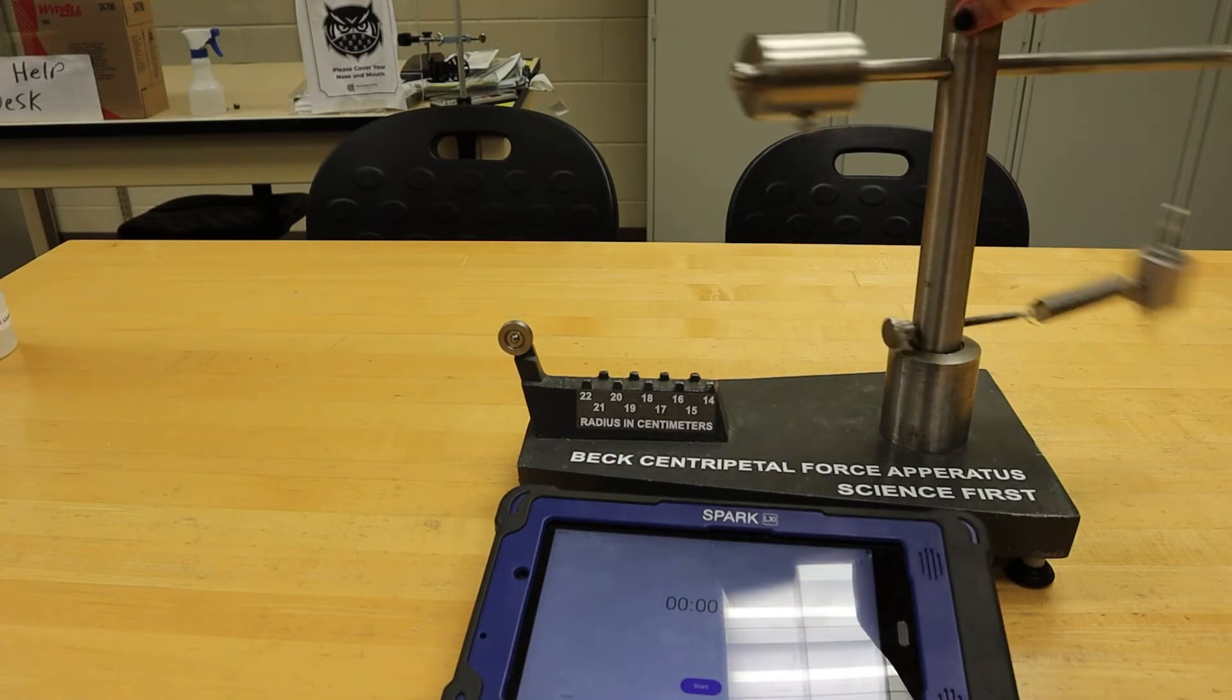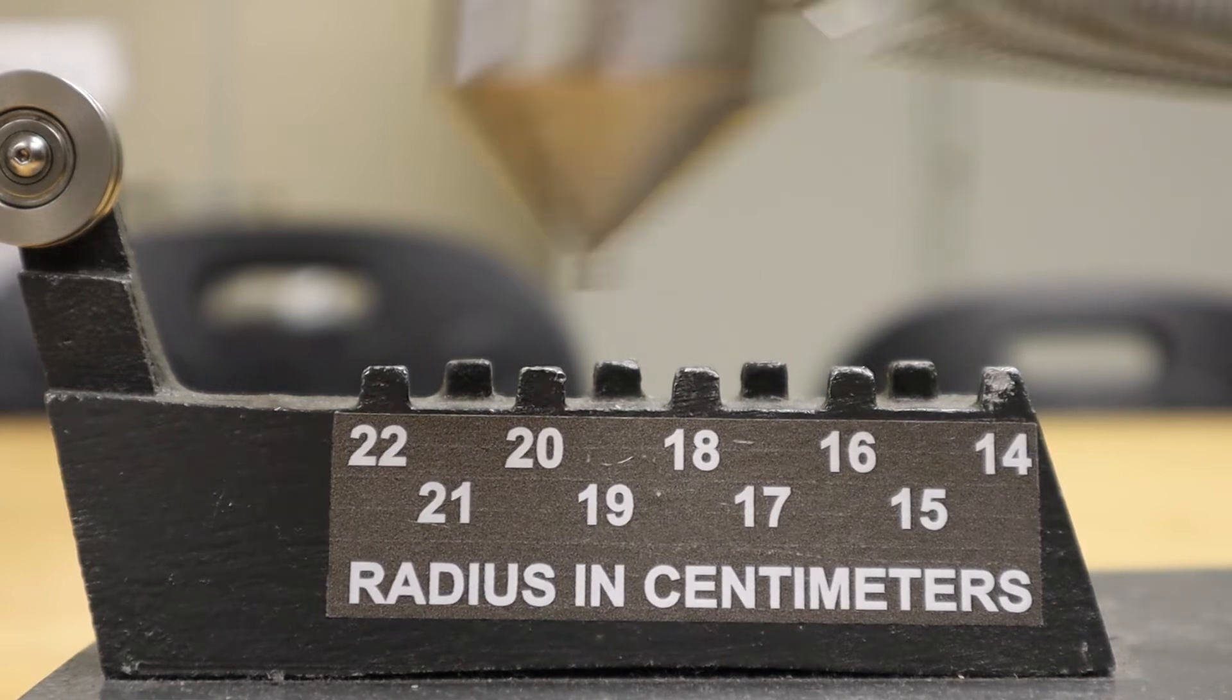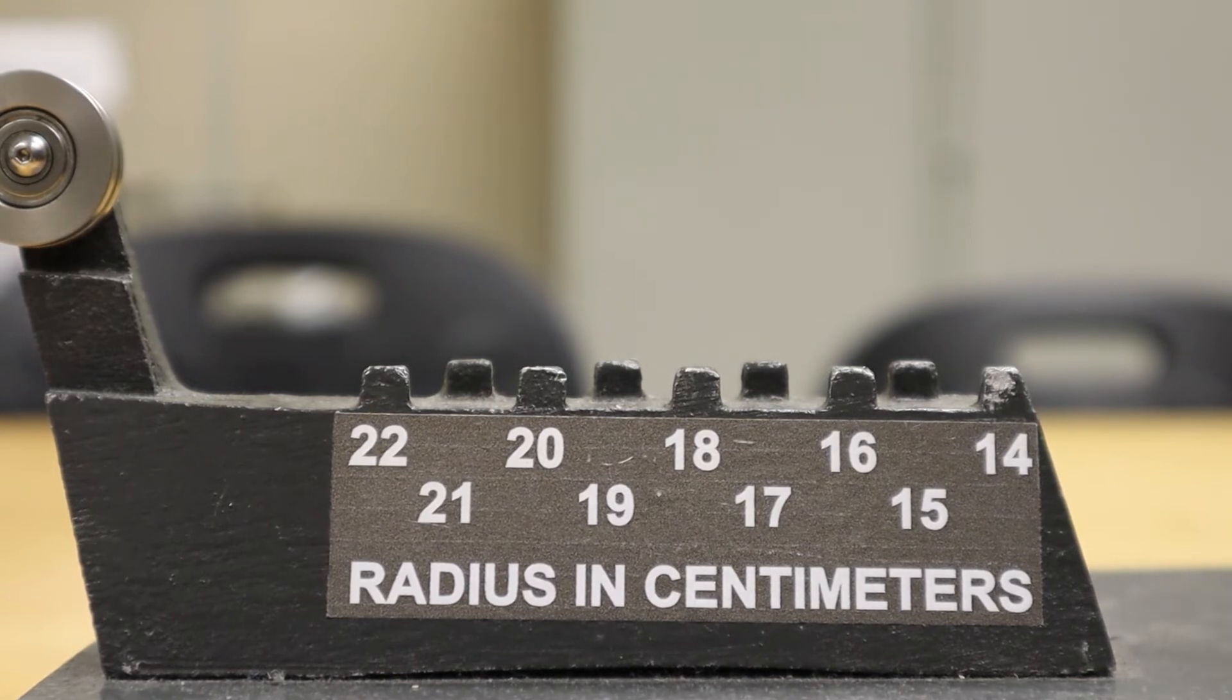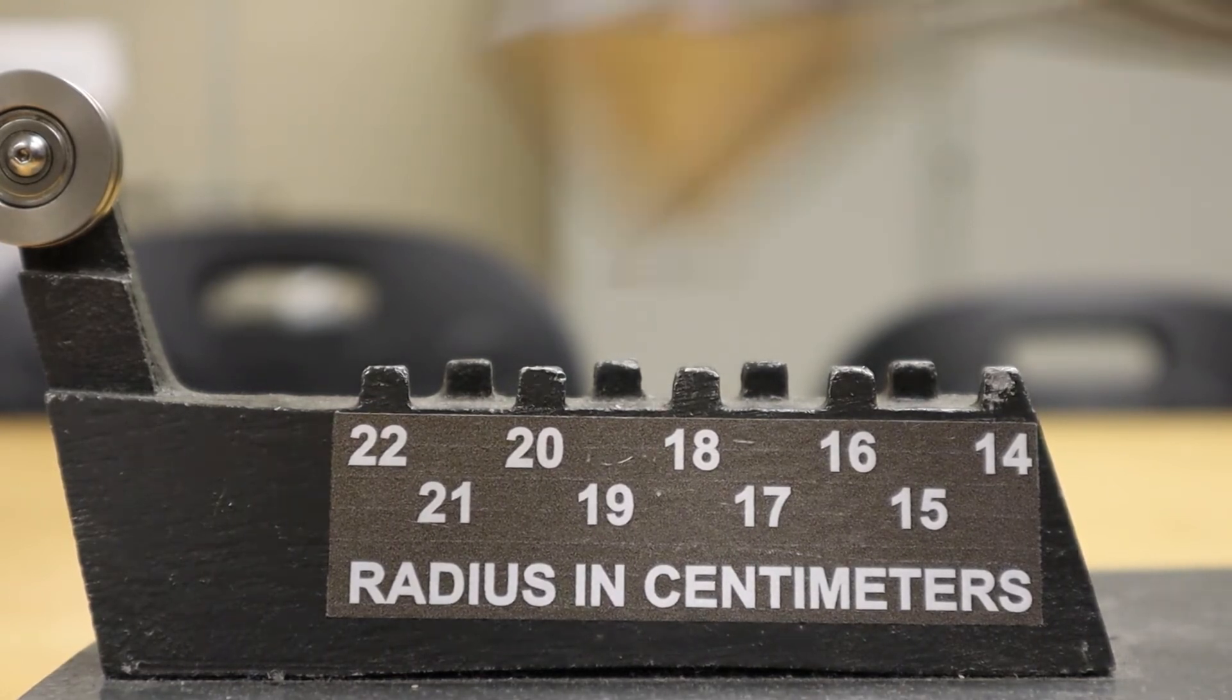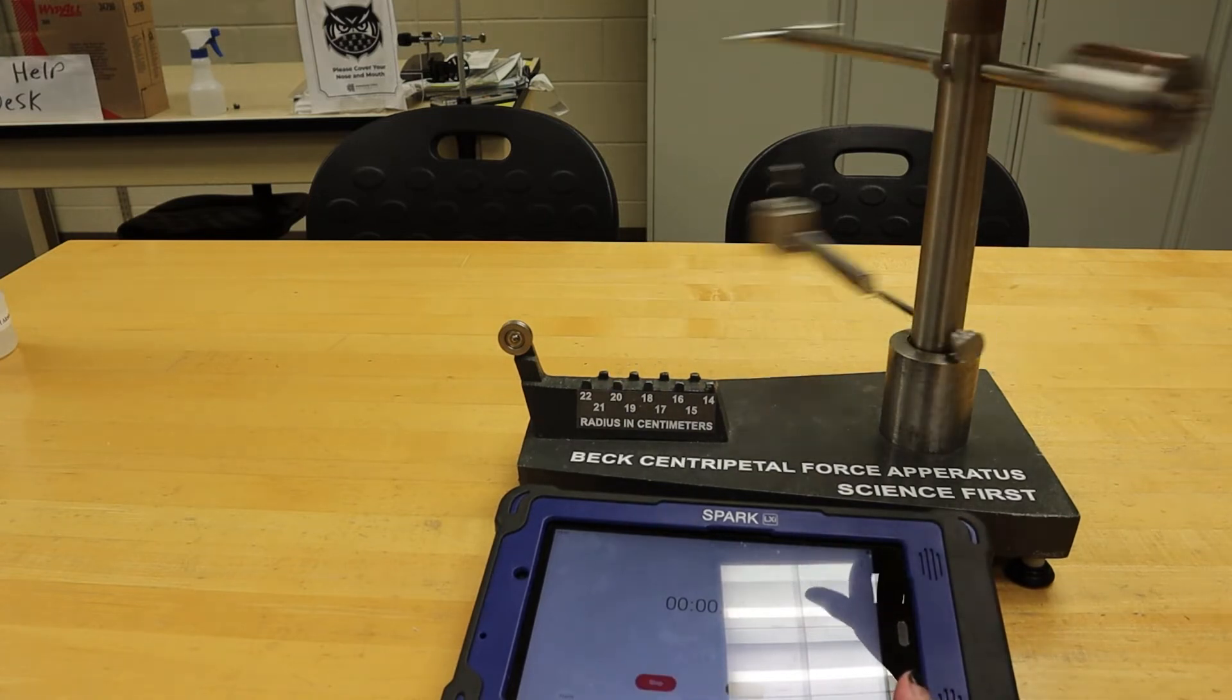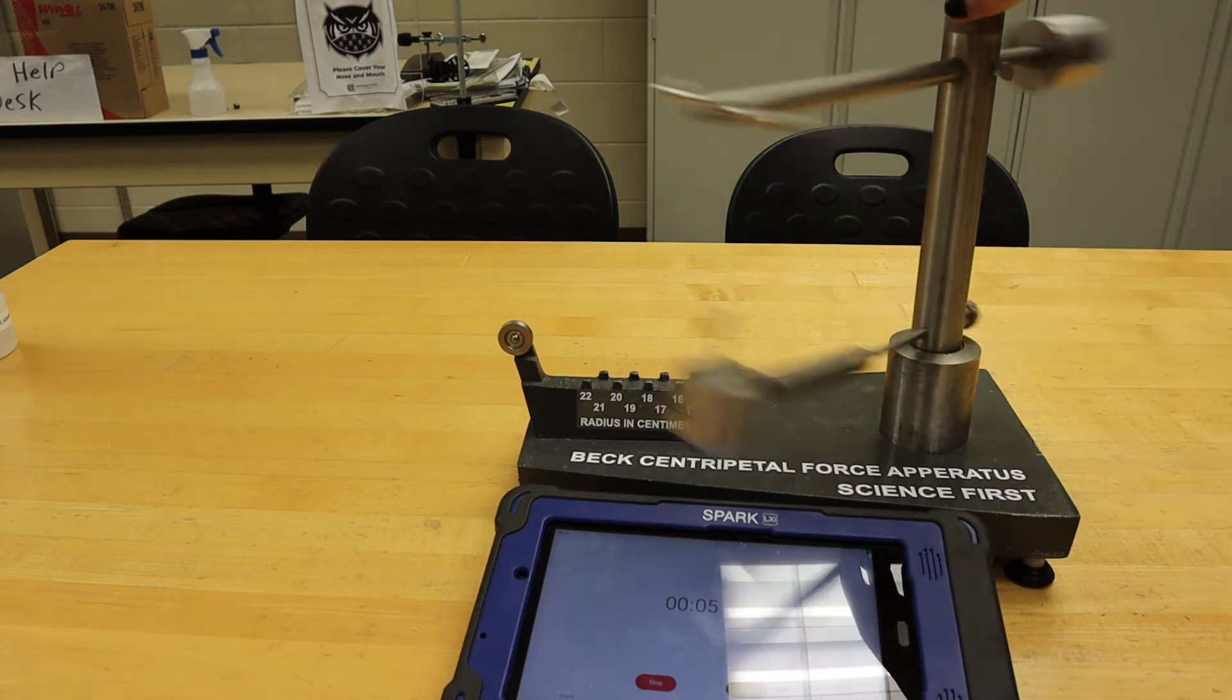We will then begin to spin the apparatus. We want the bob to be over the number that we recorded, so we have to spin it at a higher rate to get it to stretch out more. Once we see that it is over the number that we specified, we will press start on the timer and record the amount of time it takes for 30 rotations.